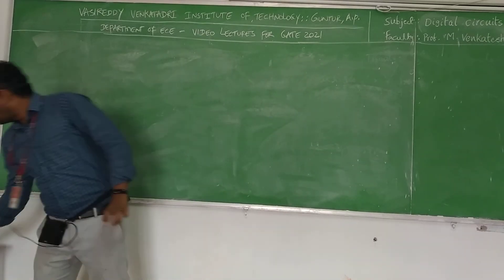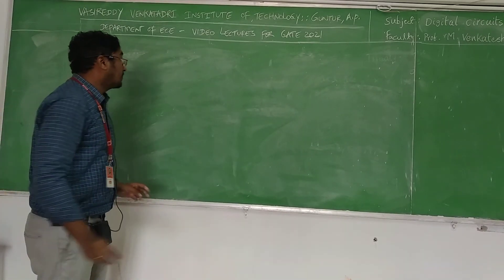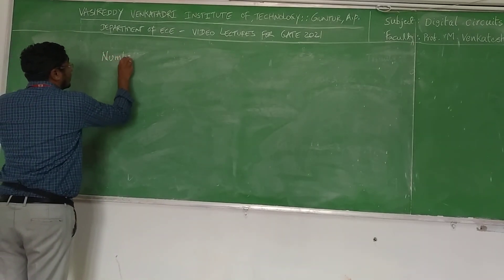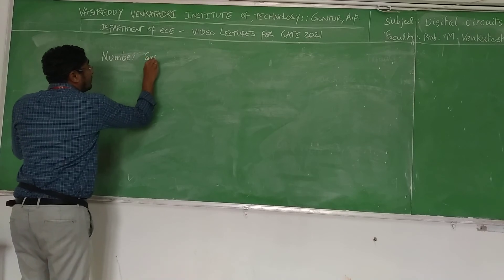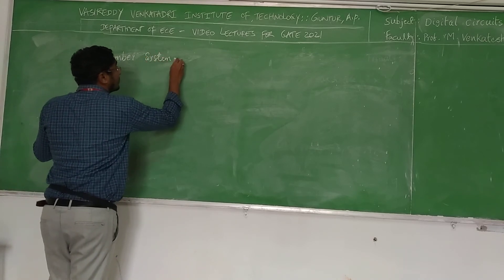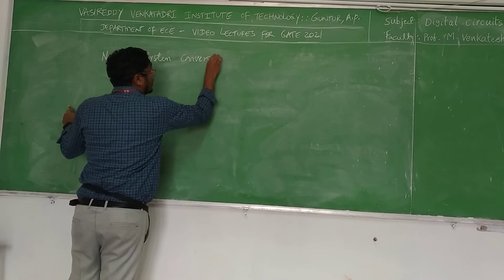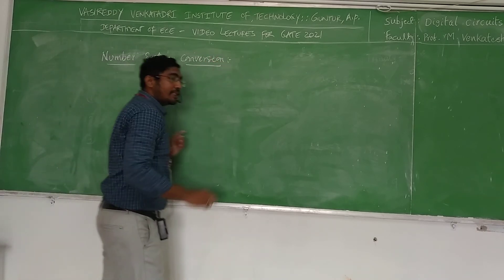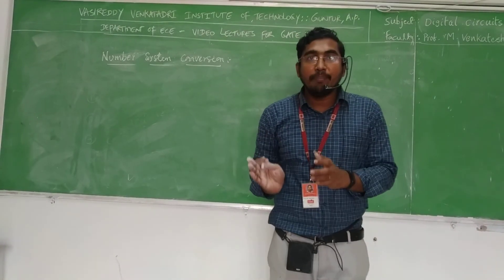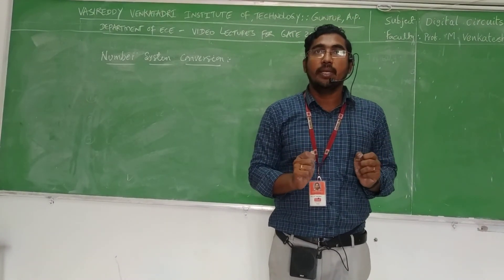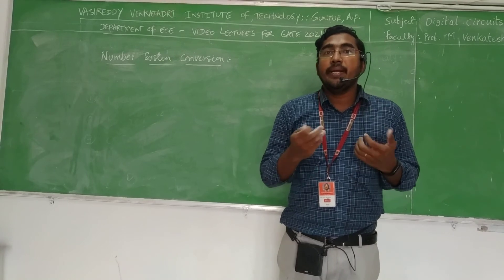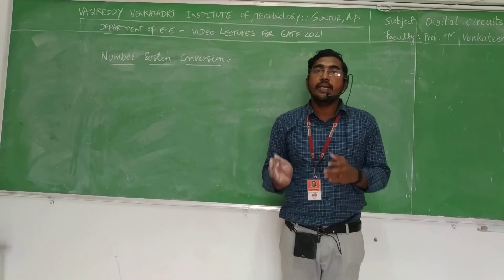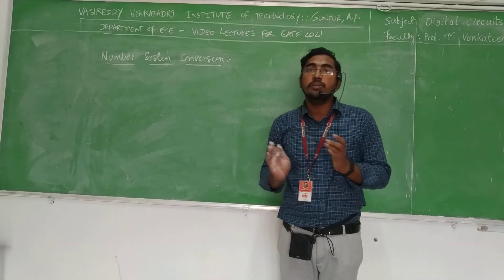Remember these two important points: total distinct digits equals the base, and the maximum digit equals base minus 1. Now we move to the next concept — number system conversion, which is converting from one base to another base. First, understand why we need to convert numbers from one base to another.